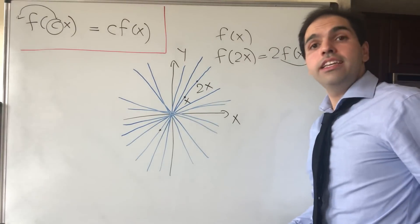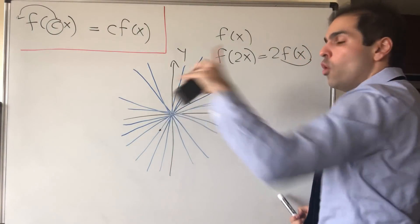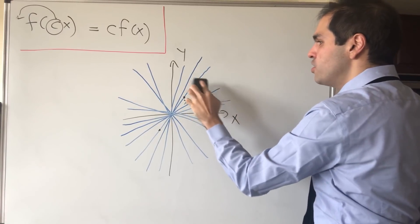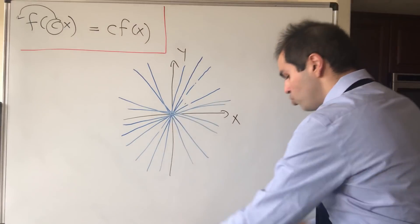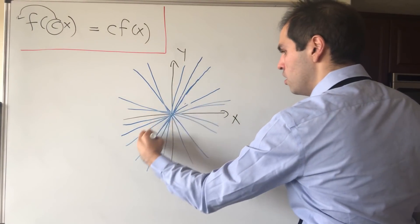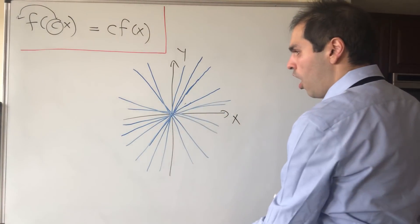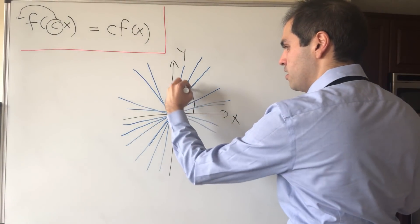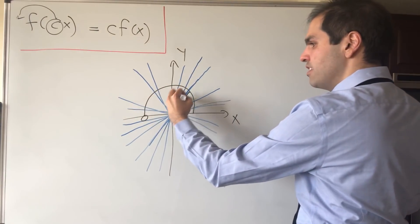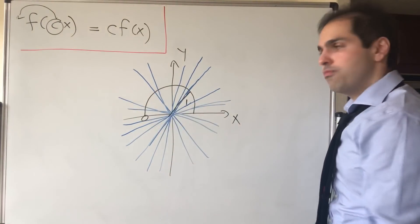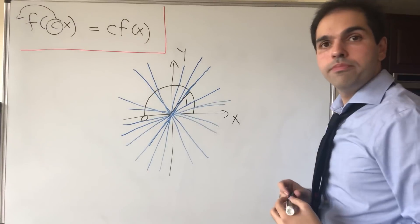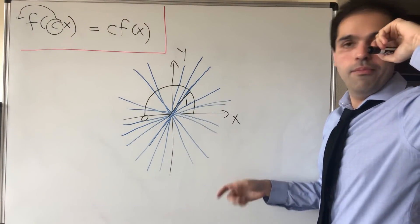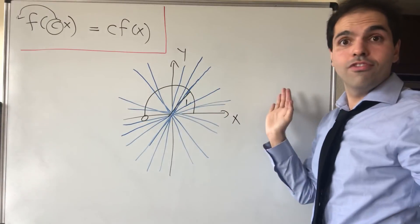What does that mean? It means to completely determine f, you just need to know one point on each line. If you think about this, this is equivalent to the following: to know the function on all of R², we just need to know the function on each point of the unit half circle. The circle of radius 1 in the upper half plane. We exclude this because it's equivalent to this point.